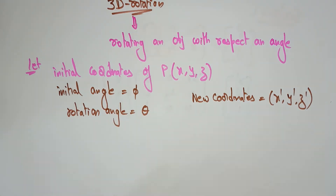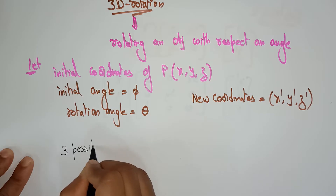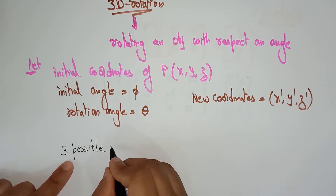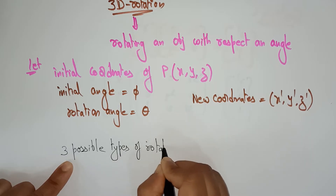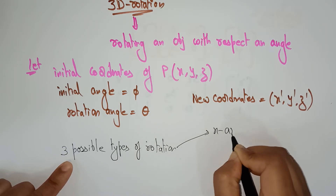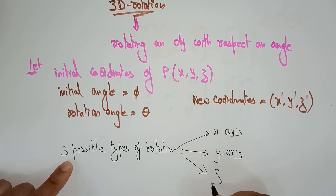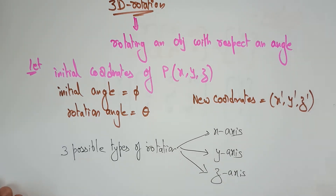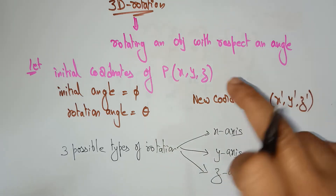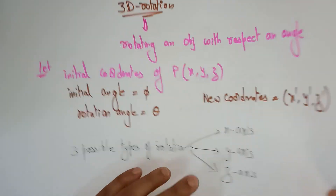I want to find out the new coordinates after rotation — that is x dash, y dash, z dash. In three dimensions, there are three possible types of rotations: x-axis rotation, y-axis rotation, and z-axis rotation. You can rotate the object in whichever direction you require. Let me explain one by one.